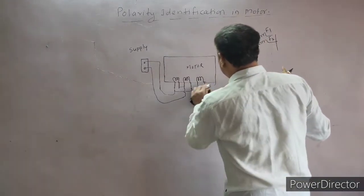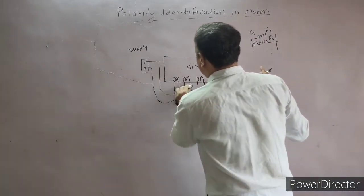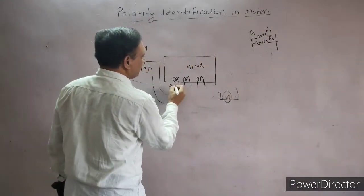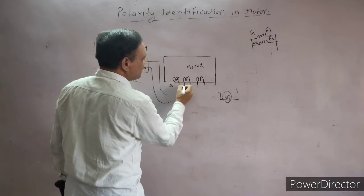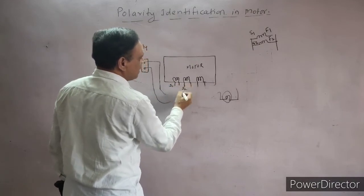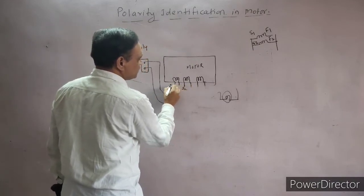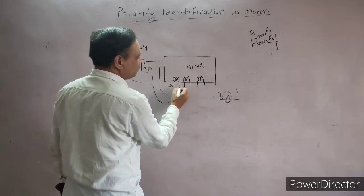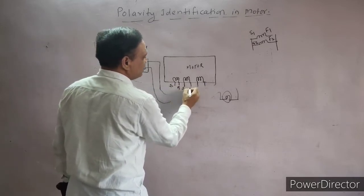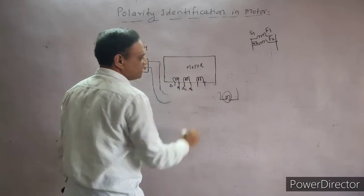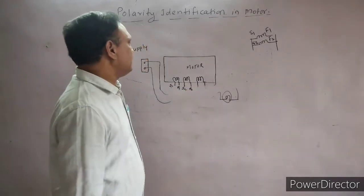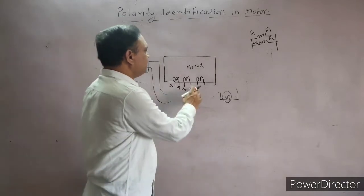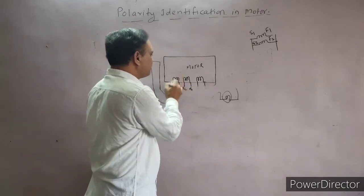So if the lamp glows, we can clearly say this is S1 — starting end one — and since the lamp glowed when these two terminals were connected together, these are both starting ends. Therefore, this is S1, this is S2, and the remaining terminals are the finishing ends — F1 and F2 of the respective coils. Now the same procedure will be repeated for the remaining two terminals.